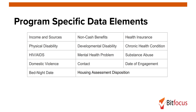To meet the statutory and regulatory requirements of federally funded programs using HMIS, additional elements are required for different funding sources. Program-specific data elements are designed and managed by at least one of the HMIS federal partner programs, and include income and sources, non-cash benefits, health insurance, physical disability, developmental disability, chronic health condition, HIV/AIDS, mental health problem, substance abuse, domestic violence, contact, date of engagement, bed night date, and housing assessment disposition.